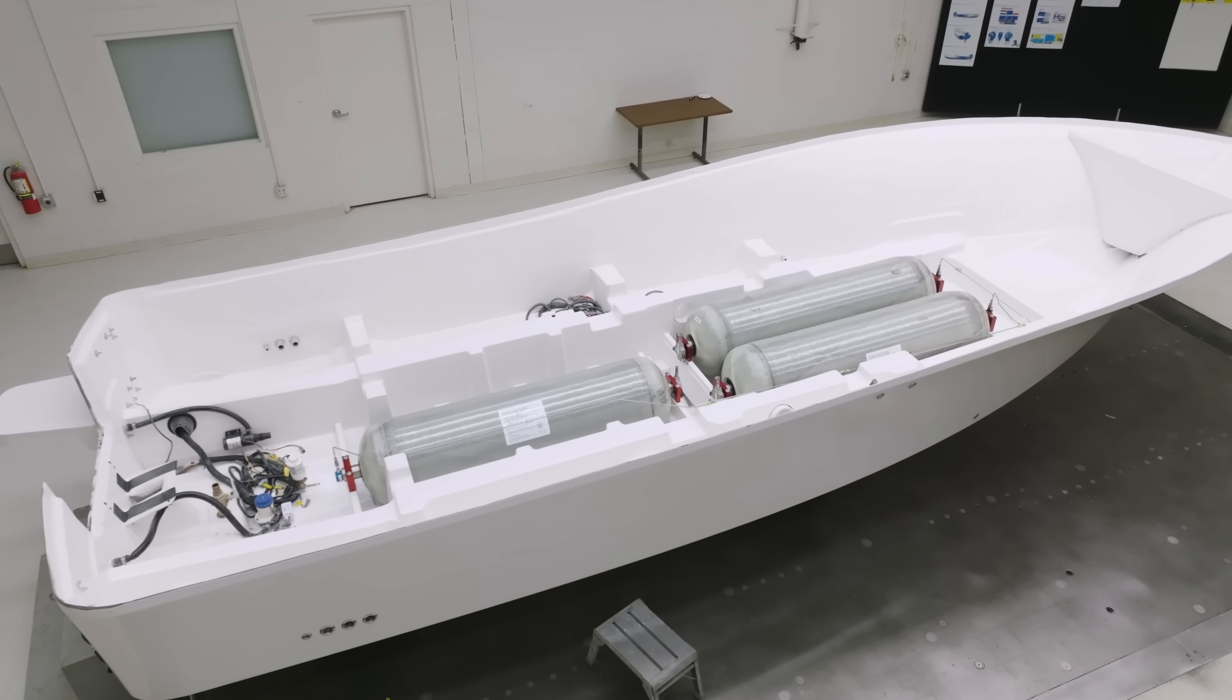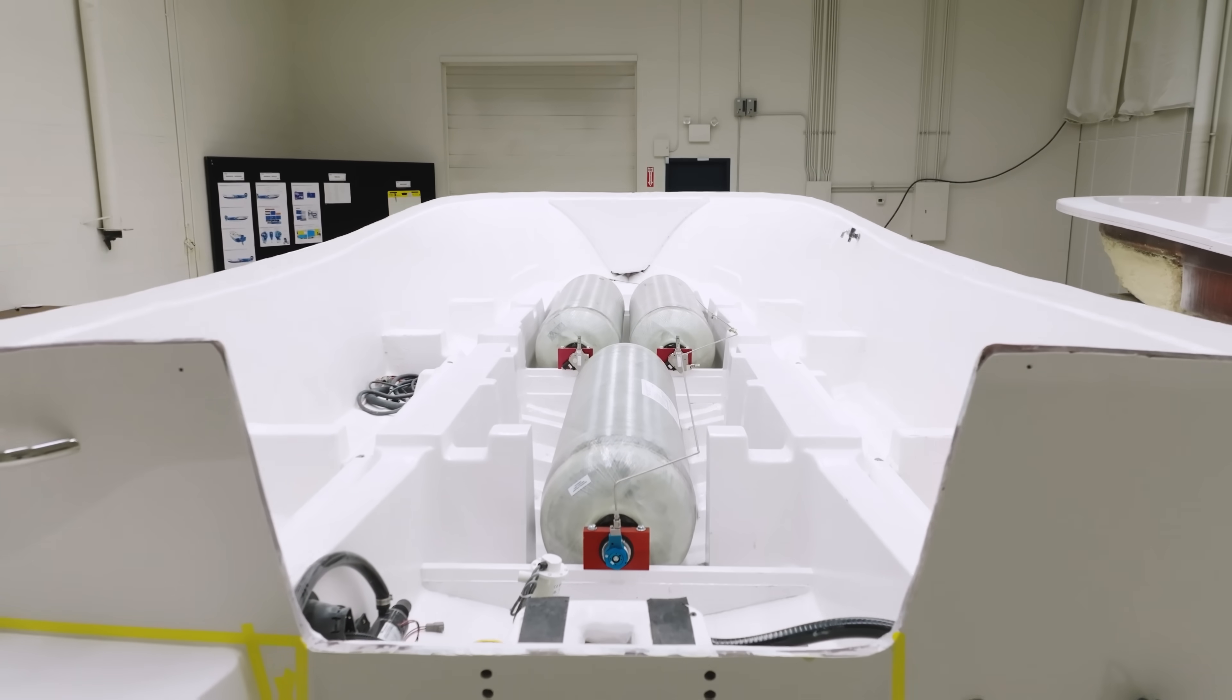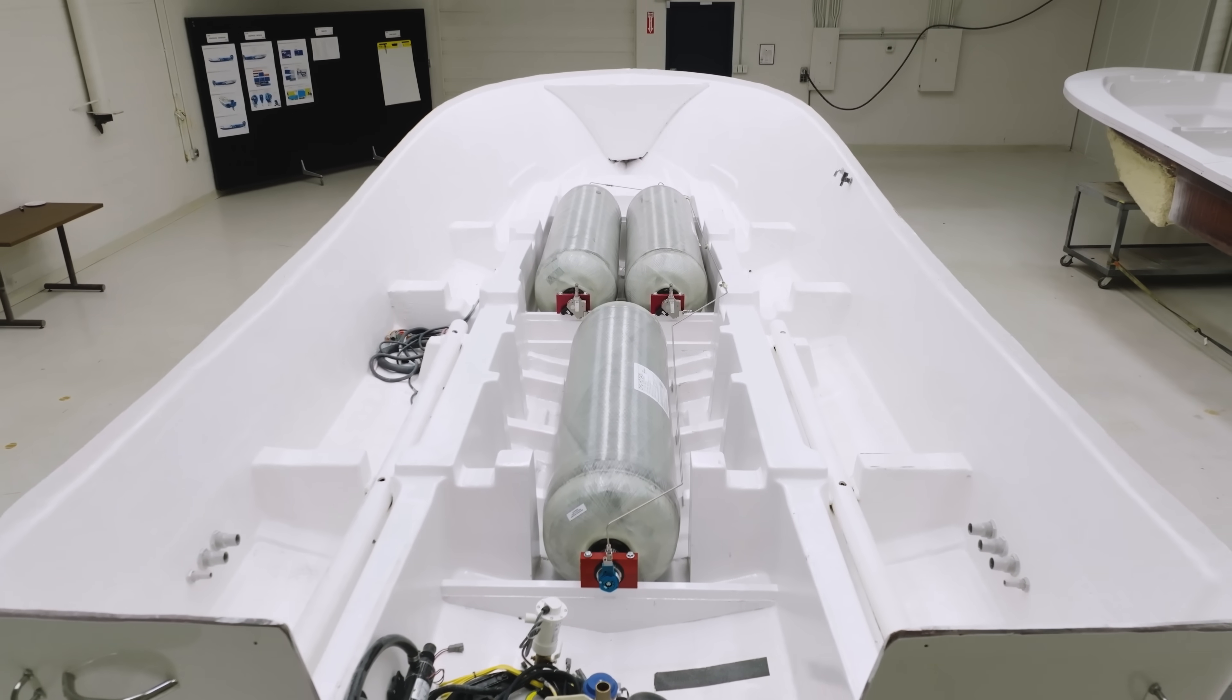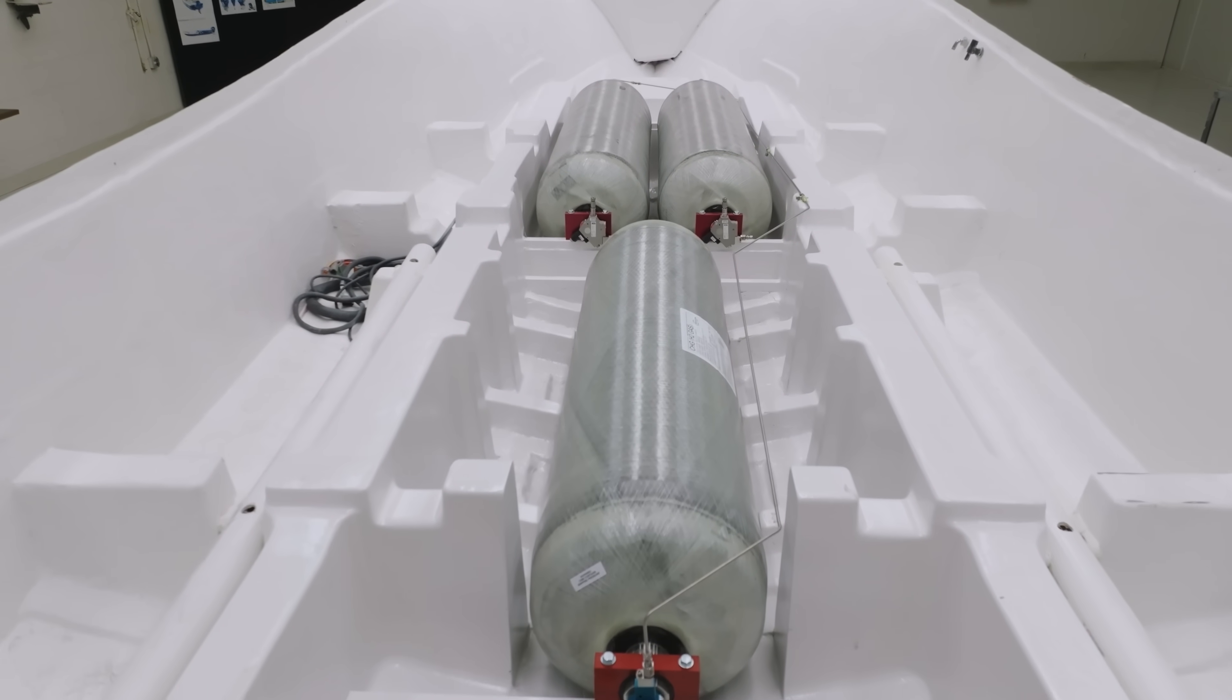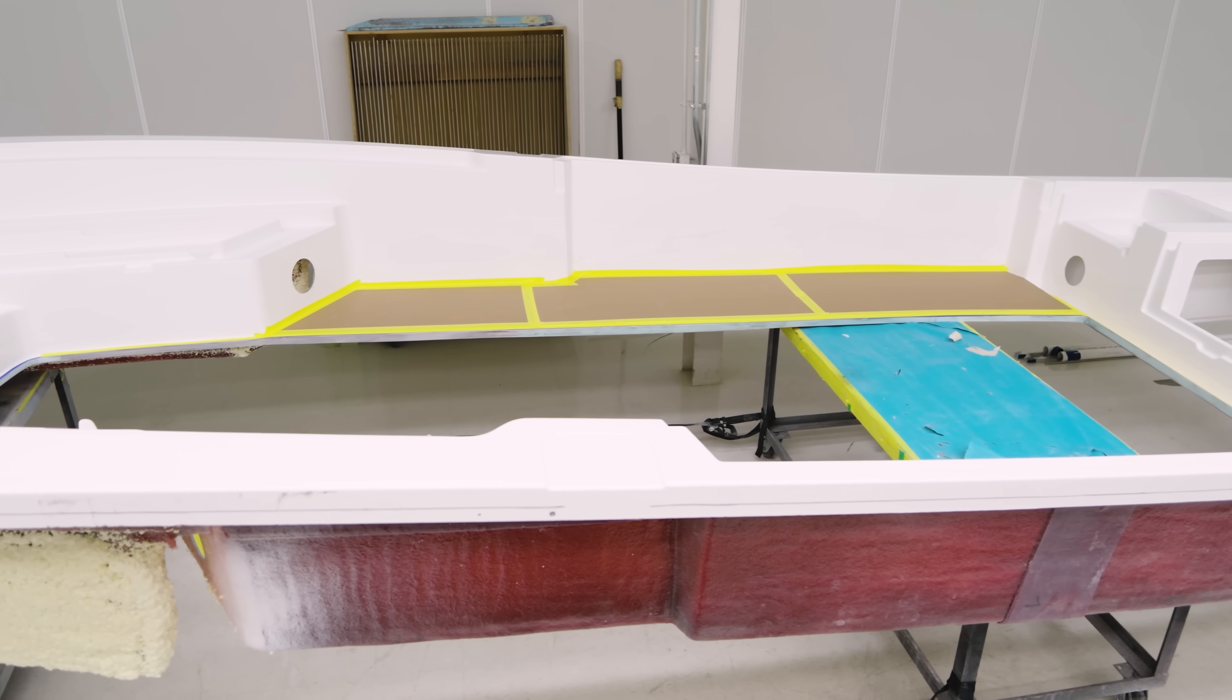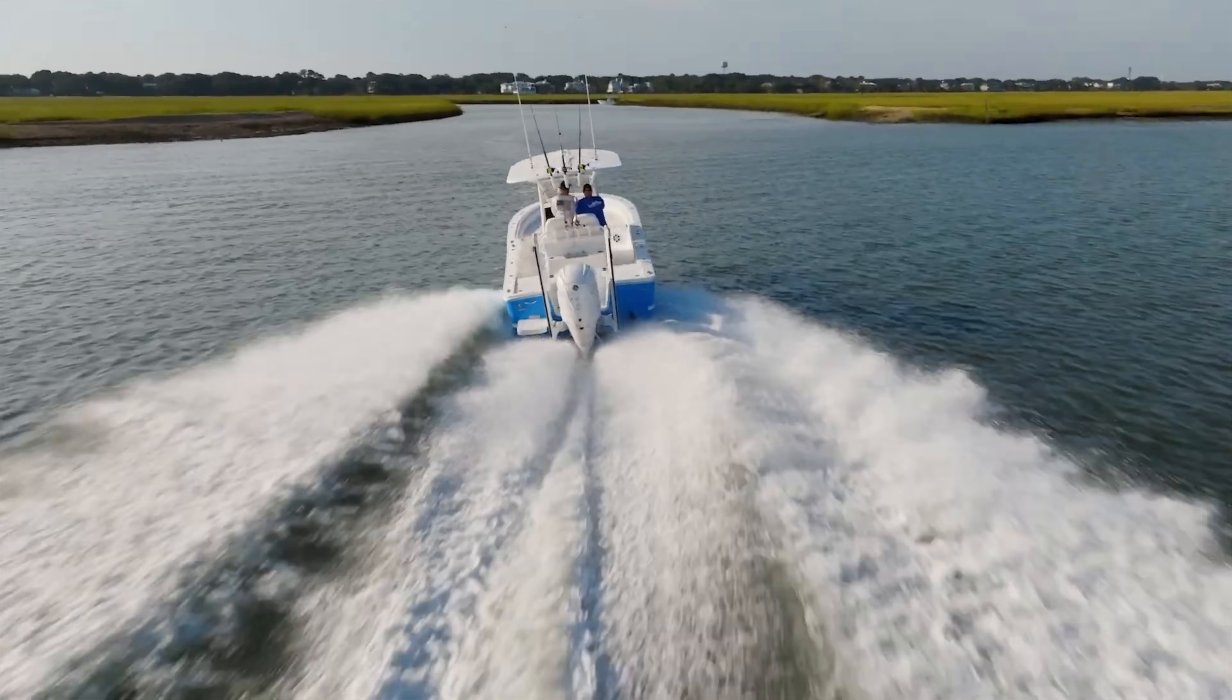As for the hull, there are some serious modifications required in order to accommodate the hydrogen fuel tanks. Usually, you're reliant on the hull as well as the grid of stringers and bulkheads to make up the structural rigidity of the boat. In this case, because the stringers and bulkheads need to be adjusted to make room for the hydrogen tanks, the deck of the boat is now used as a more structural member to increase the rigidity to match the same requirements as the gasoline version of this boat.